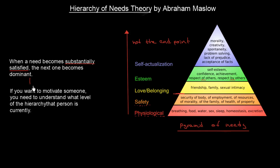What implication does this have for sociology or motivation studies? If you want to motivate someone, you need to understand what level of the hierarchy that person is currently on. A therapist, for example, would identify your current level — and if you have friendship and belonging substantially satisfied, they would motivate you with the sense of family, so you can move one step up. That was the basic overview of the Hierarchy of Needs theory by Abraham Maslow.